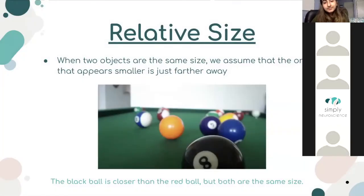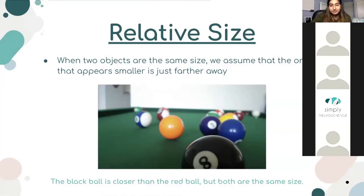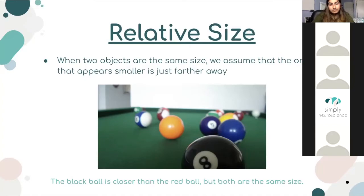The next monocular cue is relative size. When two objects are the same size, we assume that the one appearing smaller is actually just farther away. The black ball is perceived to be bigger because it's closer — the perceived distance is lesser, so the object is perceived as larger. Objects farther away are perceived as smaller, but in reality they're the same exact size. You can try this yourself: place two apples of the same size on a counter, one closer and one farther, and with your eye level with the counter, one will seem a lot bigger because it's closer to your eyes.